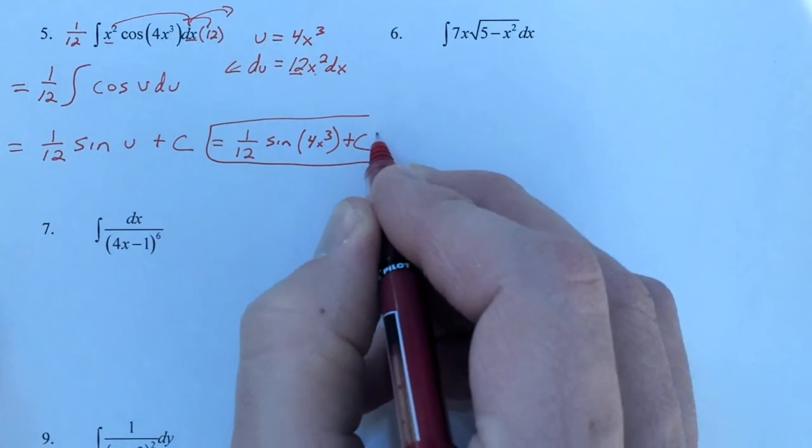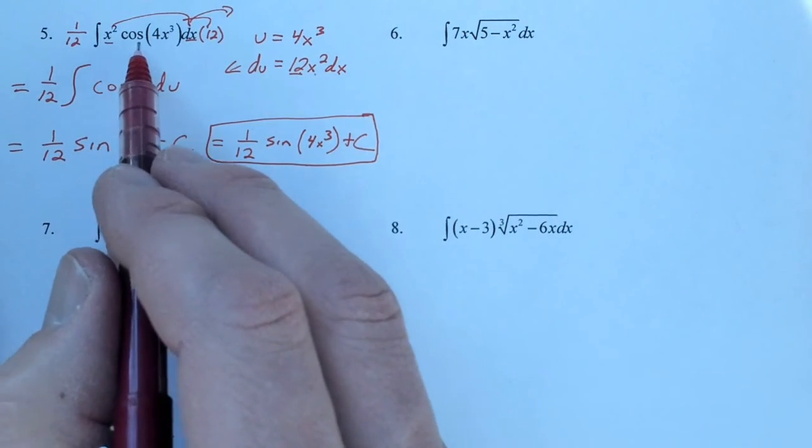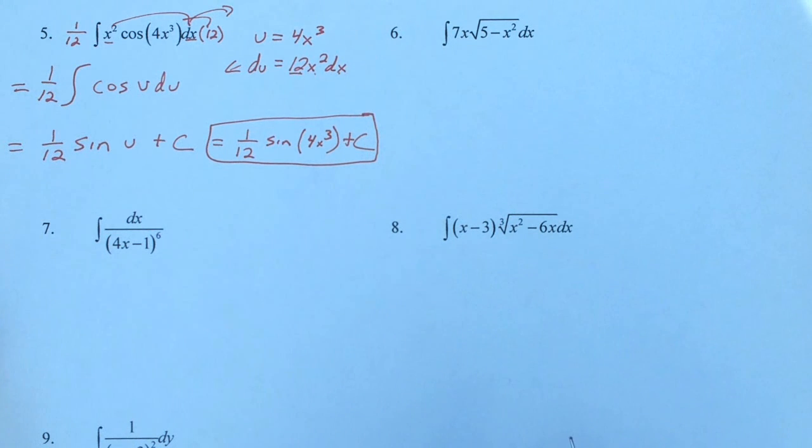And again, if you derive this, you will end up with x squared times the cosine of 4x cubed.